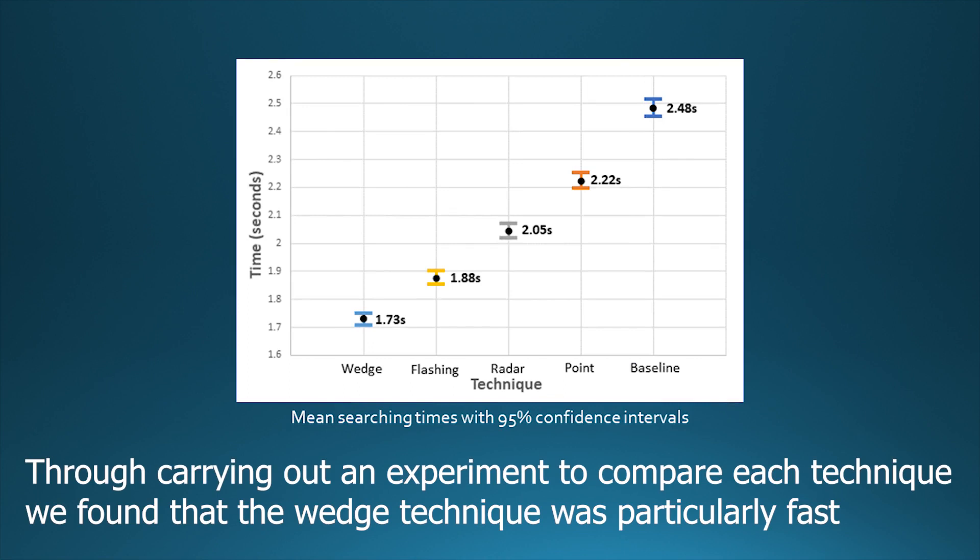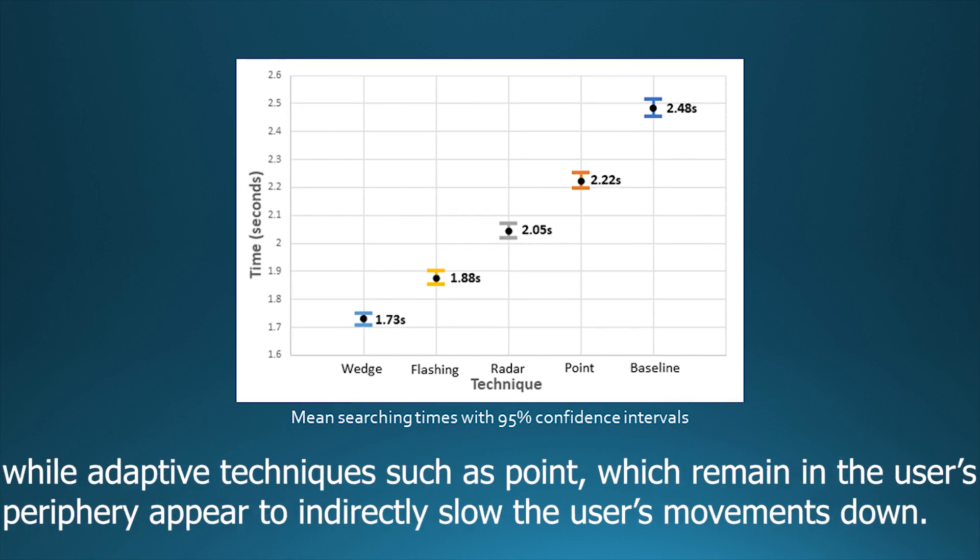Through carrying out an experiment to compare each technique, we found that the wedge technique was particularly fast, while adaptive techniques such as point which remain in the user's periphery appear to indirectly slow the user's movements down.